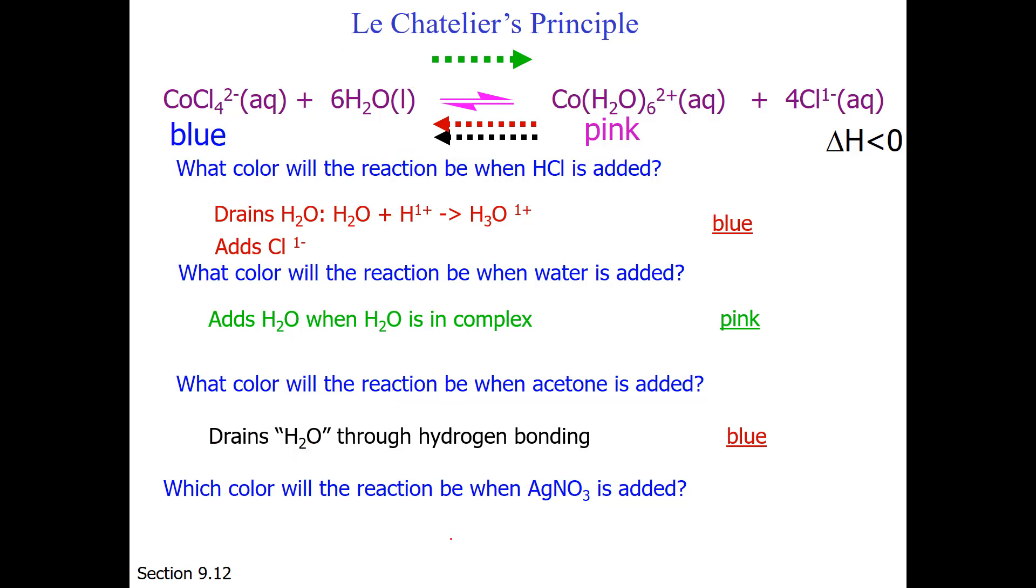What color will the reaction be when silver nitrate is added? Silver nitrate interacts by taking away the chloride, by turning it into a silver chloride solid. This is a scenario where we are removing product. And hopefully you remember that when you remove product, we will be shifting the reaction to the right. So it will turn pink in color.